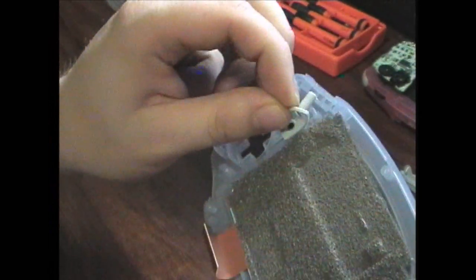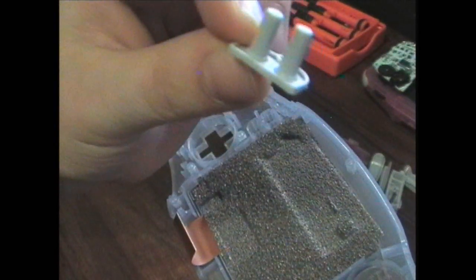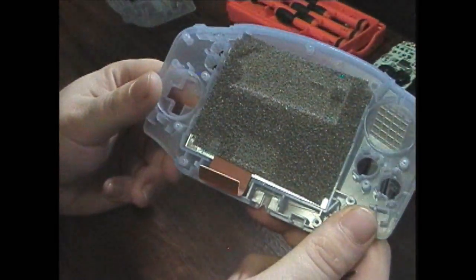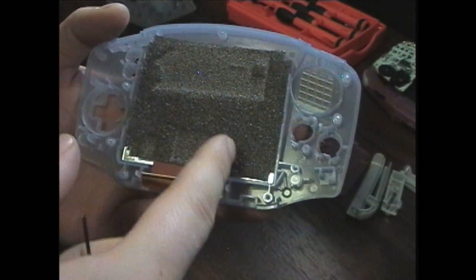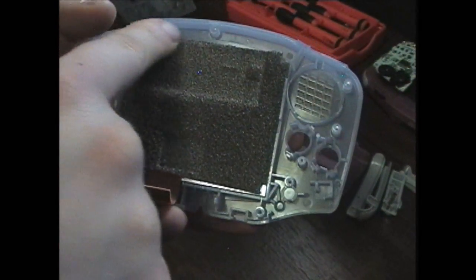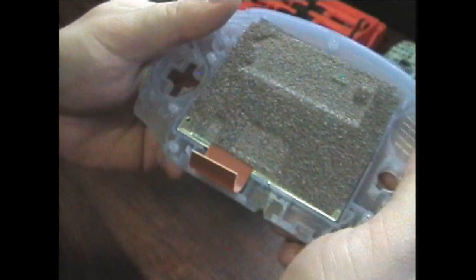Then we got the start and select buttons—it's just a big piece of rubber basically. Now we're at the screen, and the screen is basically just stuck in there with a little thing that goes around the edge.